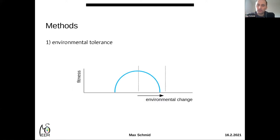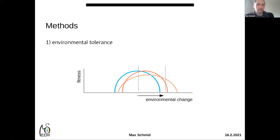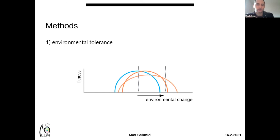Imagine a population adapted to local environmental conditions, aligning its optimum with the local condition. If the population then experiences directional environmental change, evolution can help cope in two ways: either by shifting the optimum — the peak of the tolerance curve — or, if that is not sufficient, by evolving broader tolerance. So when results show populations evolving higher tolerance, this is always the result of evolution in response to directional environmental change.